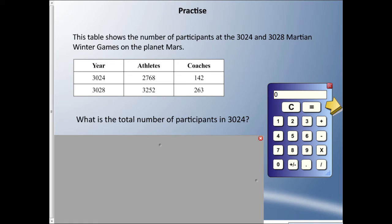What is the total number of participants in the year 3024? It's not just athletes, so you can imagine coaches are participating. Let's take the athletes, 2768, and add the coaches, 142. In the year 3024 there were 2910 participants.